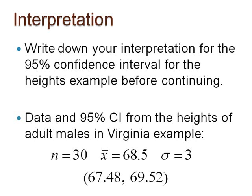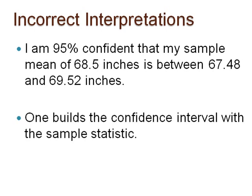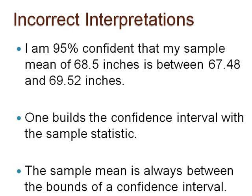To better understand the correct interpretation of a confidence interval, it is helpful to read through incorrect interpretations and determine why they are incorrect. These interpretations use the 95% confidence interval constructed for the heights of adult males in Virginia. Pause after each interpretation and try to determine the reason it is incorrect. The first one reads: I am 95% confident that my sample mean of 68.5 inches is between 67.48 and 69.52 inches. This interpretation is unnecessary because one builds the confidence interval with the sample statistic value. The sample mean is always between the bounds of the confidence interval, so technically we are 100% confident.